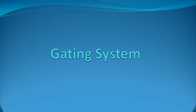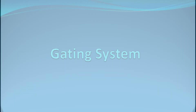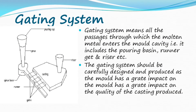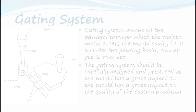In this video we learn about the gating system. The gating system means all the passages through which the molten metal enters the mold cavity. It includes the pouring basin, runner, gate, and riser, etc. The gating system should be carefully designed and produced as the mold has a great impact on the quality of the casting produced.